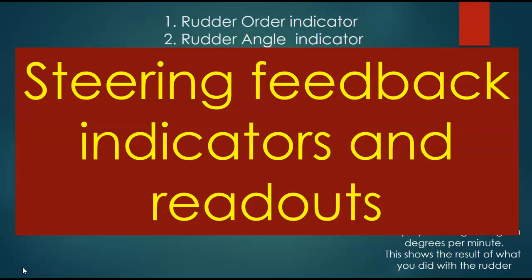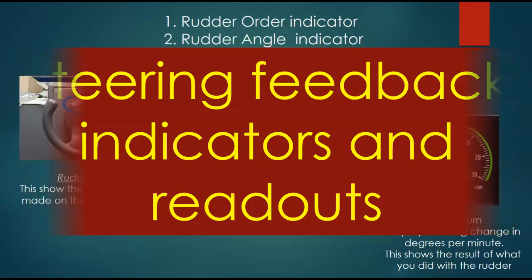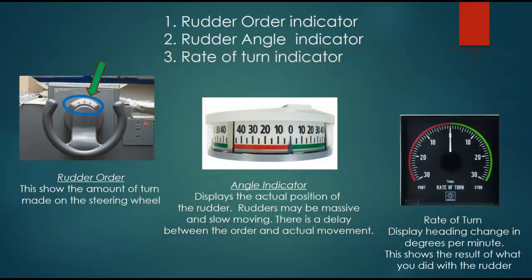We're going to be talking about steering — that's where we were — and then we're going to go on and talk about lookout. Steering feedback indicators. We have three different instruments here: a rudder order indicator, a rudder angle indicator, and a rate of turn indicator. We'll go through number one, number two, and number three.